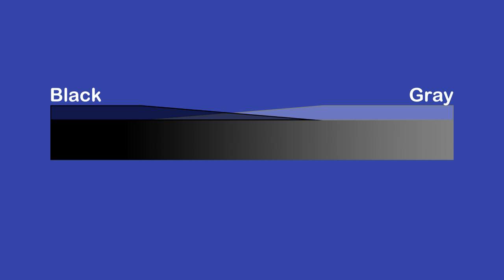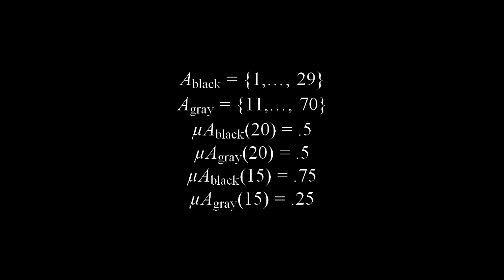They each have a membership of 1 in their respective sets. But there's a fuzzy area where they cross over. You might consider shade 10 to be black and shade 30 to be gray, and in between you have a movement from one set to the other. So shade 20 would be half in the black set and half in the gray set. Its membership in both sets would be 0.5. It is an equal, though not perfect, fit to both sets.